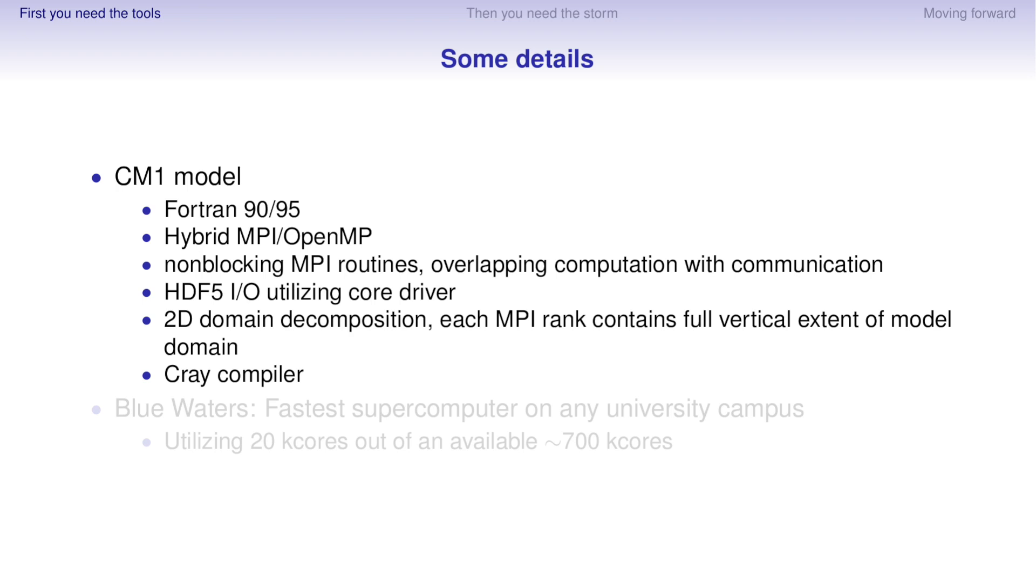So let me talk about the model. The model is called CM1. It was developed by George Bryan at the National Center for Atmospheric Research. It's in Fortran. It uses a hybrid MPI, OpenMP architecture, non-blocking communication, HDF5 using the core driver to buffer writes to memory, 2D domain composition.